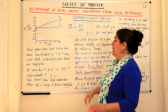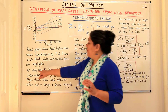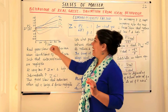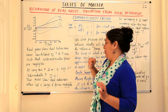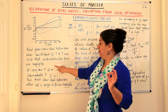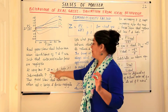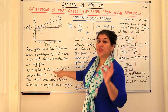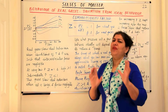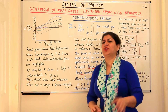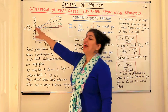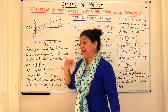At very low pressures, we find that Z has a value of approximately 1, that is the compressibility factor is approximately equal to 1. Therefore, at very, very low pressures, all gases behave as ideal gases.